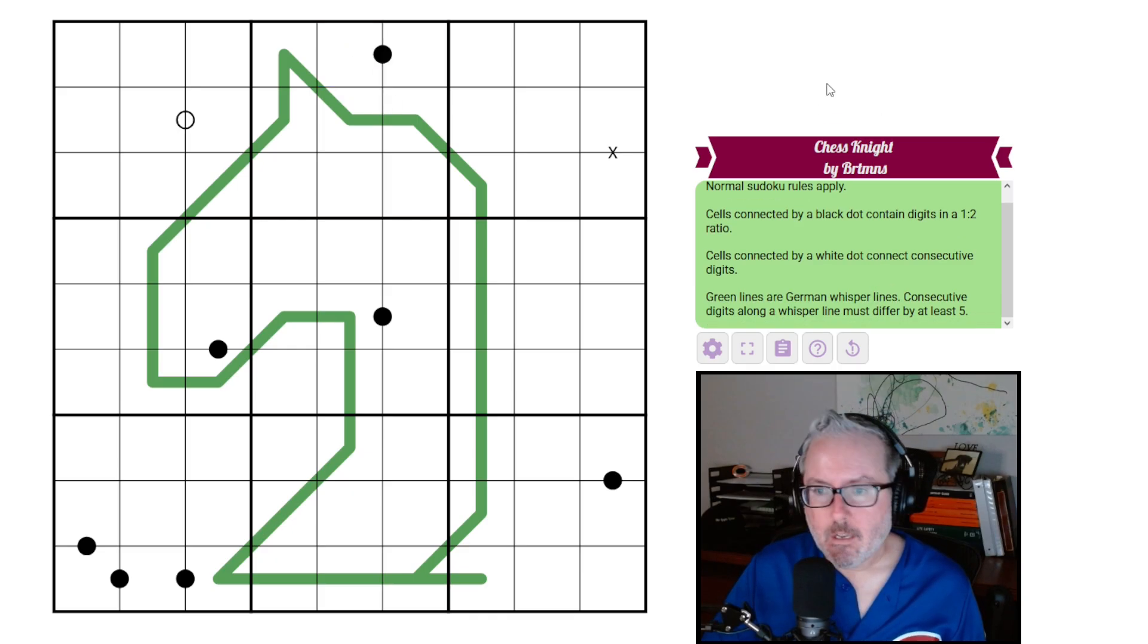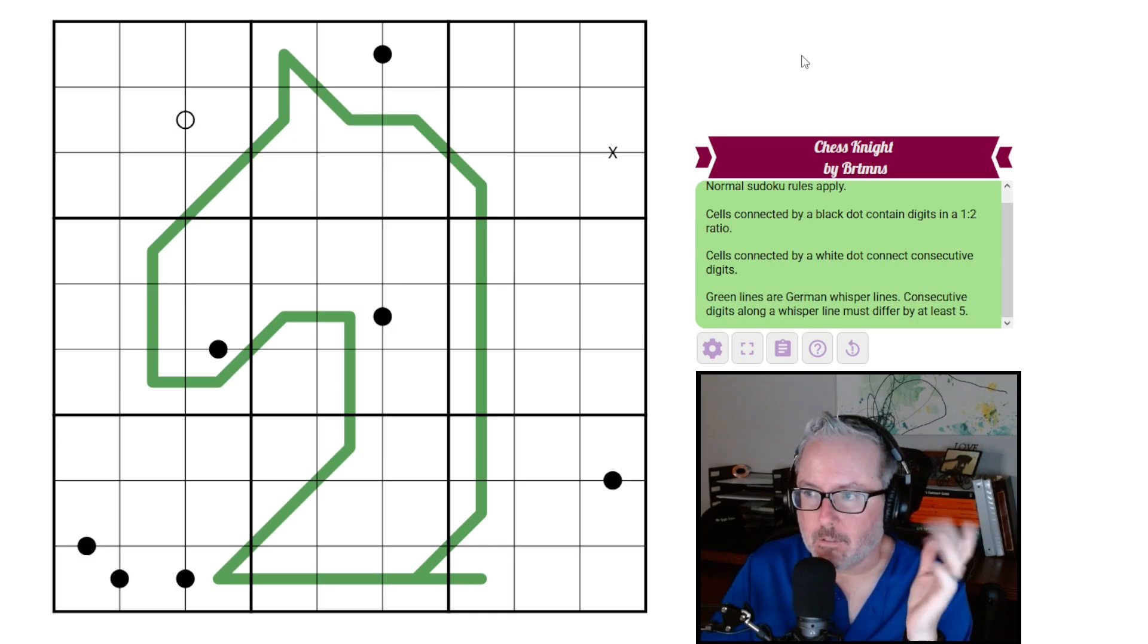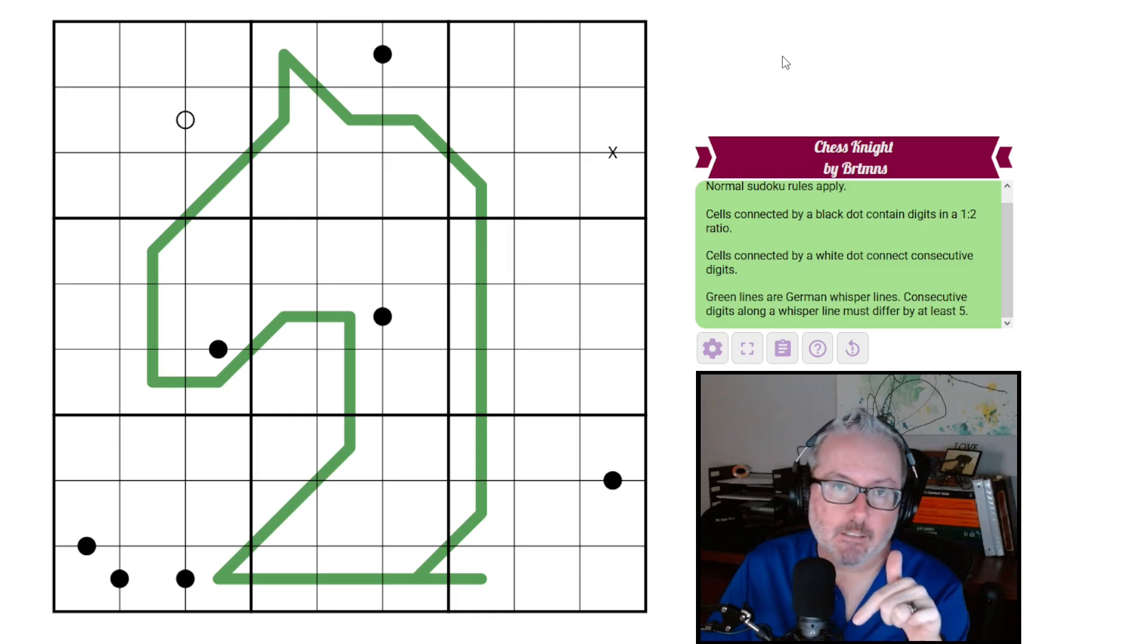And then we have a German Whisper. So the green lines are German Whisper lines. Consecutive digits along a Whisper line must differ by at least five. So whatever this digit is, this one has to be five away from it, that one five away from that one, and so on and so forth all across our Chess Knight. This is probably going to be pretty simple to solve. The setter said themselves they didn't see much problem with that. But again, it's more about having a little bit of fun and showcasing a new setter. Link's going to be in the description below. Let's get at this thing and have a little bit of fun.